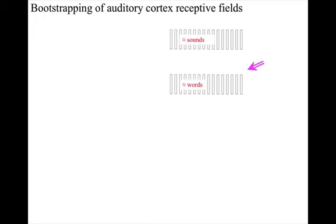In the higher auditory areas, neurons have genetically defined biases in favour of inputs from combinations of the earlier areas, with the number of inputs and the thresholds set at levels appropriate for discriminating between words.